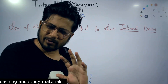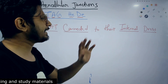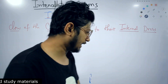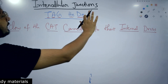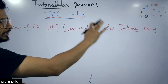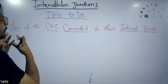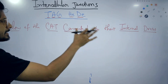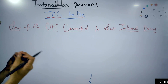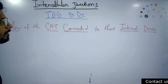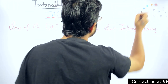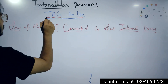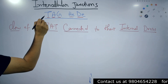It's a little bit meaningful but mostly non-meaningful. 'Internal dress' means obviously there's a part of their body we are discussing. So TAG HEADY is the way to remember the five major intercellular junctions, and 'claw of the CAT, connected to their internal dress' is the mnemonic to remember the proteins. Let me write down the important steps.